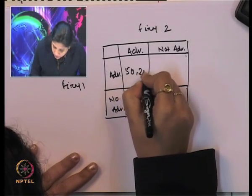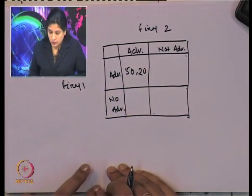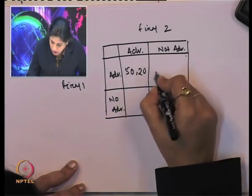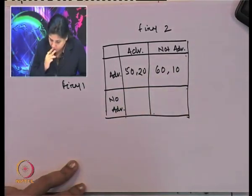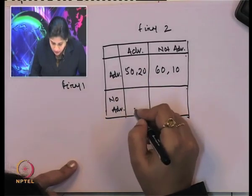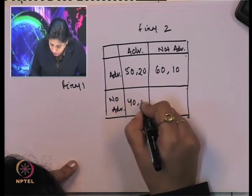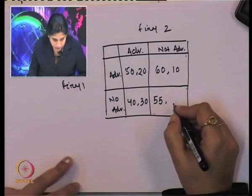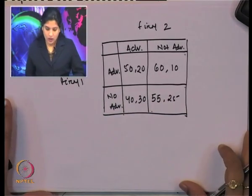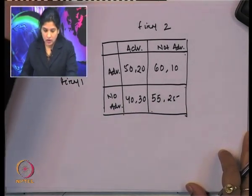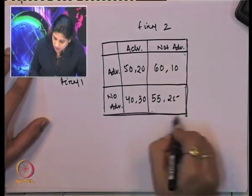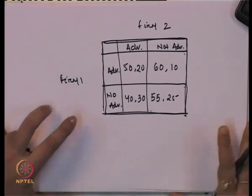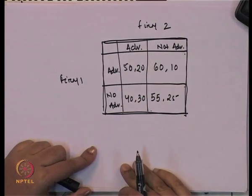When both firms are advertising, firm 1 gets a market share of 50 and firm 2 gets 20. When firm 1 is advertising and firm 2 is not advertising, firm 1 gets 40 and firm 2 gets 30. When both are not advertising, firm 1 gets 55 and firm 2 gets 25. We are assuming that firm 1 and firm 2 both have to be rational.